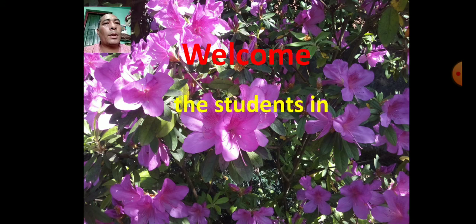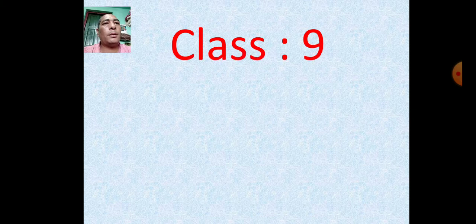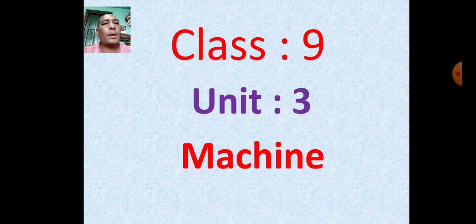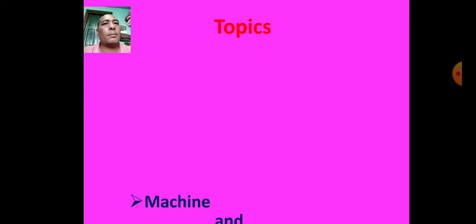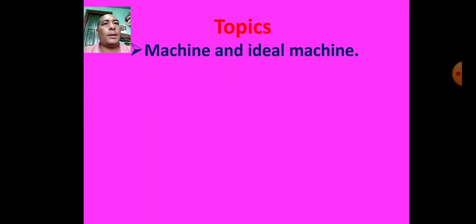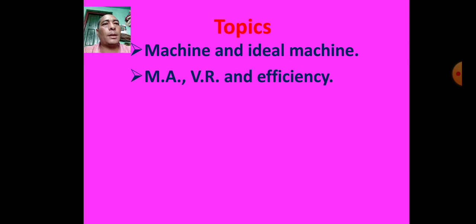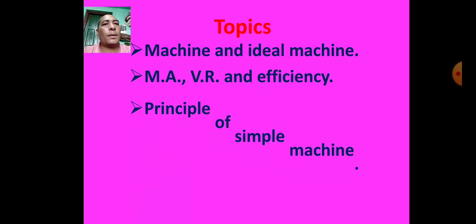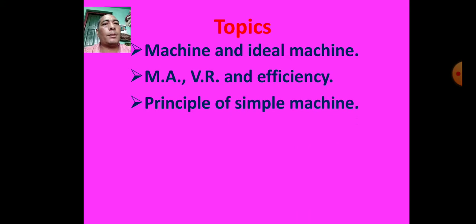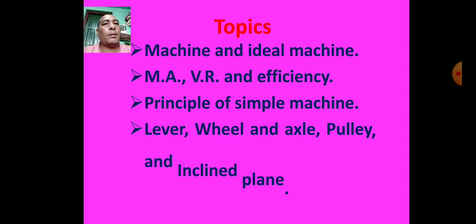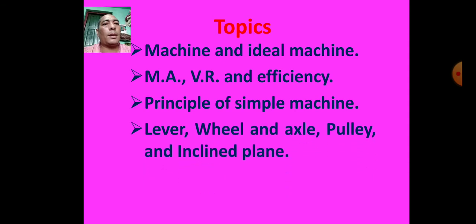Welcome students to science class, Class 9, Unit: Simple Machine. Topics covered: simple machine and ideal machine, mechanical advantage, velocity ratio and efficiency, principle of simple machine, lever, wheel and axle, pulley and inclined plane, and numericals.